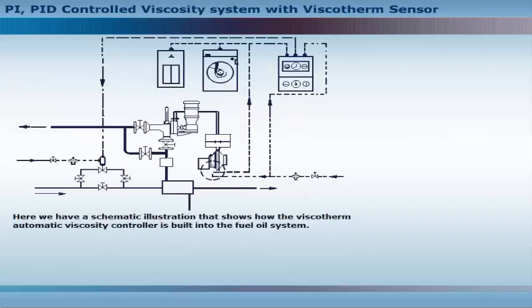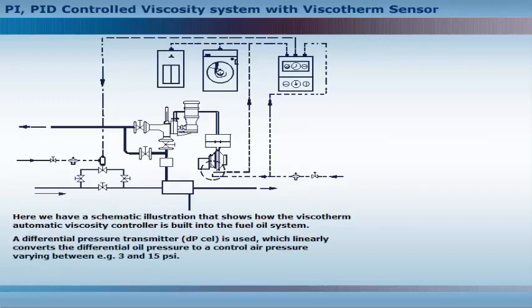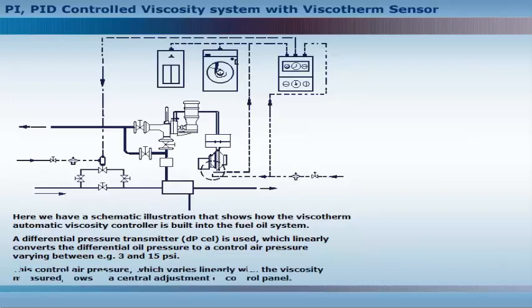Here we have a schematic illustration that shows how the viscotherm automatic viscosity controller is built into the fuel oil system. A differential pressure transmitter is used, which linearly converts the differential oil pressure to a control air pressure varying between 3 and 15 psi. This controller air pressure, which varies linearly with the viscosity measured, flows to a central adjustment or control panel.